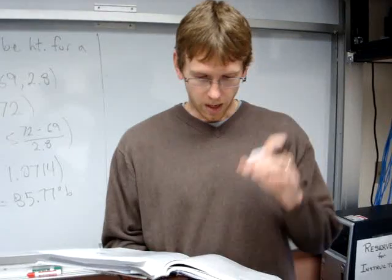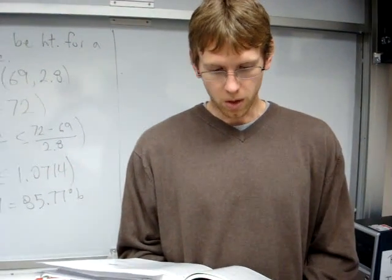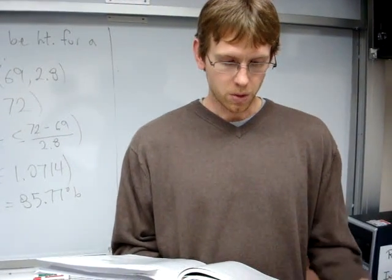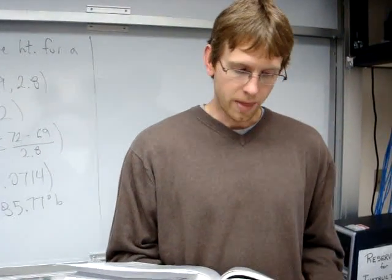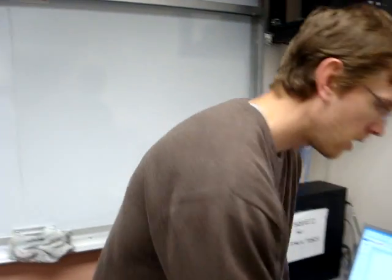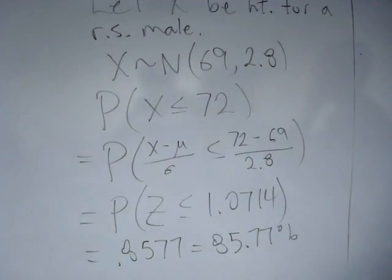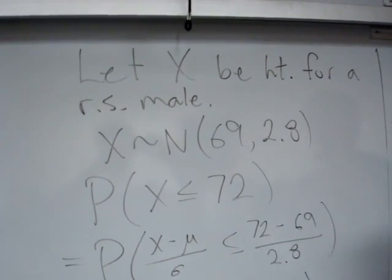The problem reads: the Mark VI monorail used at Disney World and the Boeing 757-200ER airliner have doors with a height of 72 inches. So what percentage of adult men can fit through the doors without bending? It gives us in the top of the problem that the distribution of men's heights is at least approximately normal with mean 69 and standard deviation of 2.8.